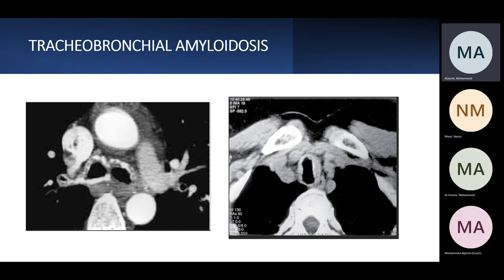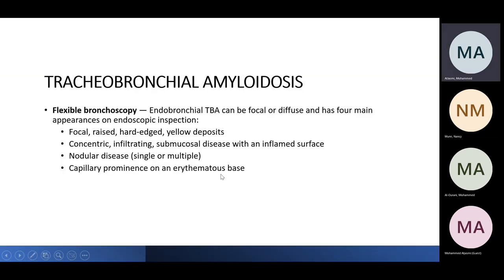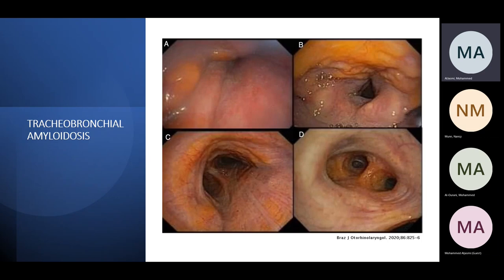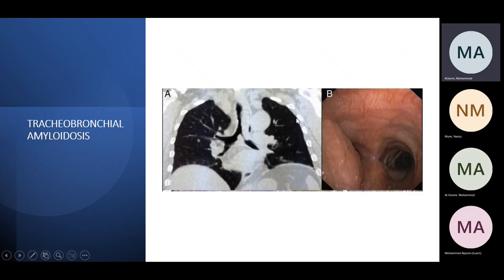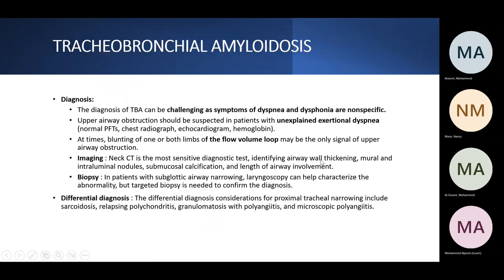CT scan findings demonstrate tracheal narrowing and right main bronchus calcification. Flexible bronchoscopy, performed after CT suspicion, can show irregular, hard-edged, yellow deposits with concentric infiltrates and submucosal disease — which can be nodular. Endobronchial imaging shows nodular edges, and CT scan demonstrates thickening of the left main bronchus with irregular nodular appearance.